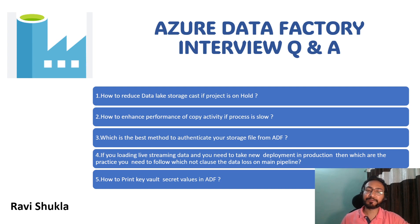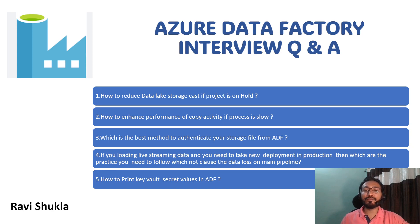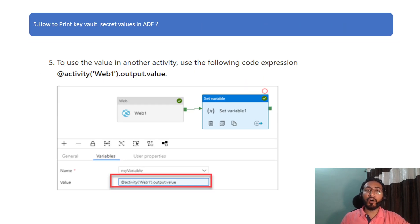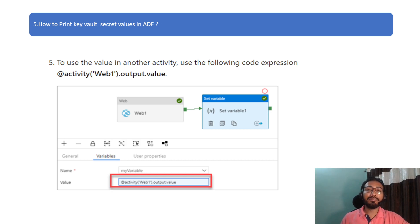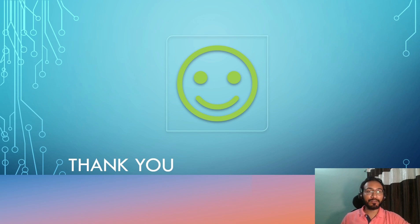Fifth question: how to print Key Vault secret values in ADF? Key Vault is where you keep your secrets — it is accessible from any Azure service, and you can use it without exposing your private data or secret keys. This question comes up in interviews where the interviewer wants to see secret values displayed on ADF, which is not the ideal case. To do it: call a Web activity to retrieve your secret keys from Key Vault. Then to display it, use the Set Variable component — in Set Variable you get the Web activity output, and when you run the pipeline it will show the output from a display perspective.